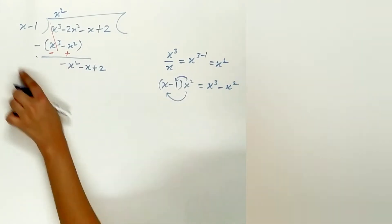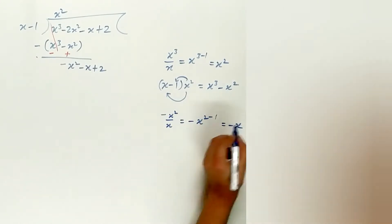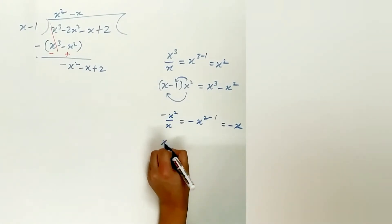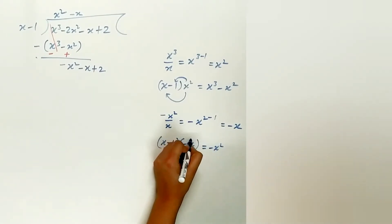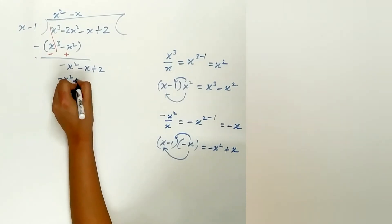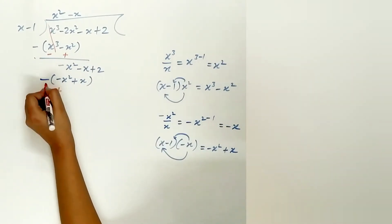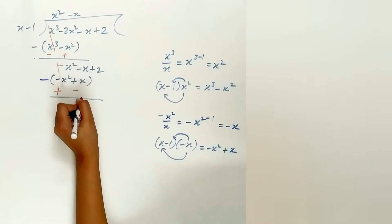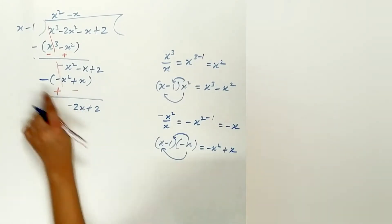Divide minus x square by x, which is equal to minus x. Multiply minus x with the divisor: minus x times x is minus x square, and minus x times minus 1 is plus x. Change the sign: minus minus is plus, and minus plus is minus. So minus x square plus x square is 0, and minus x minus x is minus 2x, bringing down plus 2.